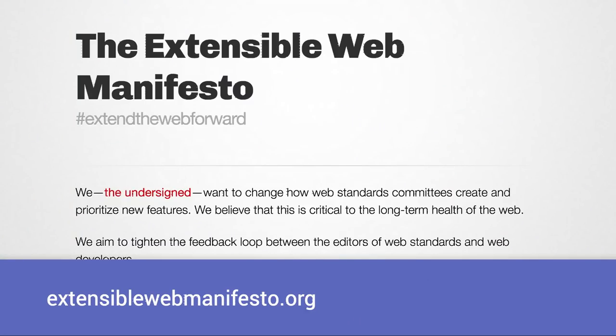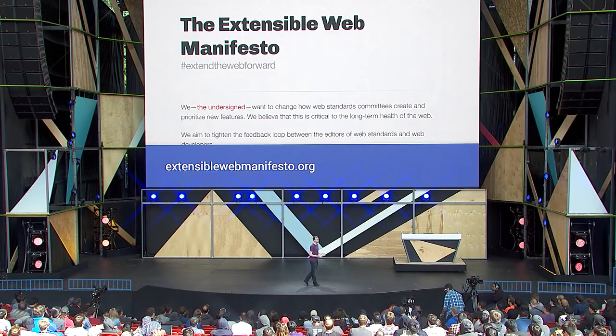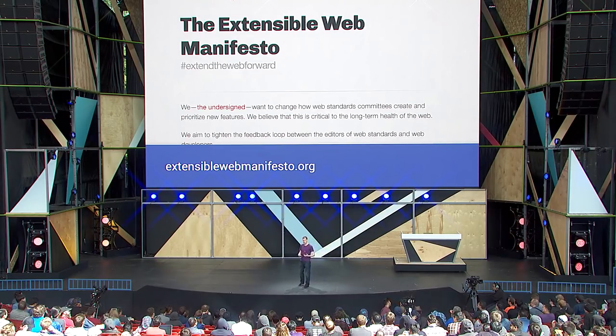This whole thing gave rise to the extensible web manifesto, which most browser vendors are now fully behind. Here we acknowledge that browser developers and standards developers are not better at building websites than web developers. We should stop tossing out scraps from our ivory towers like AppCache, like CSS reflection forced in one particular way. Instead, we should give developers full control — give you as much information and as many hooks as we can. By providing low-level access, you can create things we didn't consider and use patterns we didn't invent.